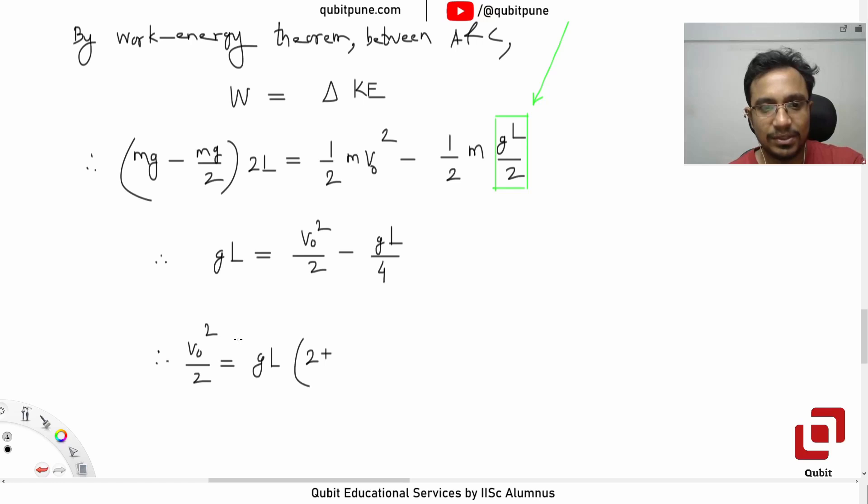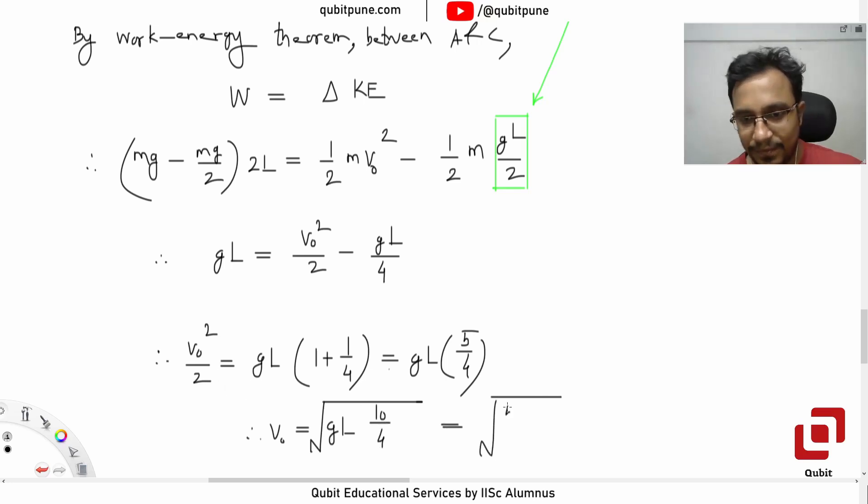So V_0 squared by two is equal to GL into one plus one upon four. And then if you take the LCM, it will be five upon four. And therefore V_0 will be GL inside the root into 10 by four or five by two. And yes, five by two. V_0 is five by two GL root.